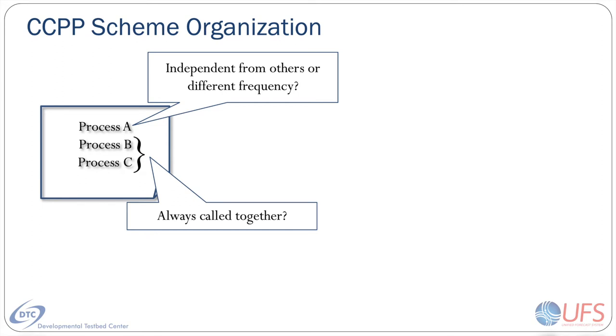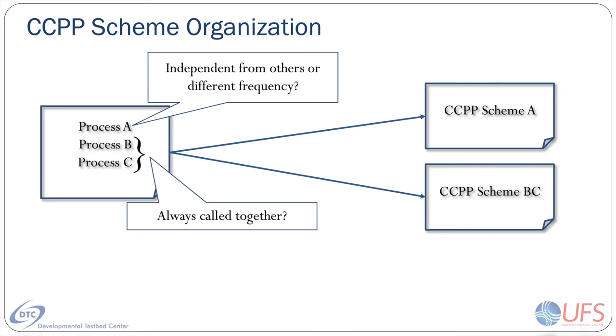Consider the following processes A, B, and C. Let's assume that process A runs independently, but that process C depends on how process B is calculated. In this case, it makes sense to have a CCPP scheme for process A alone and a CCPP scheme for the combined processes B and C.